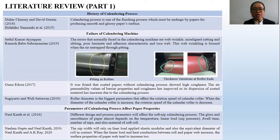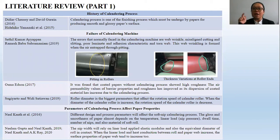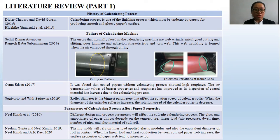Literature Review Part 1. DD Chelsea, Devin Gurin 2016, and Hidehiko Yamazaki 2015 have stated that the calendering process is one of the paper finishing processes that must be undergone by the paper in order to increase the smoothness and glossy level of the paper. Failure of the calendering machine is normally found in terms of the calendar roller, specifically when fluting occurs and thickness variation appears at the roller ends.